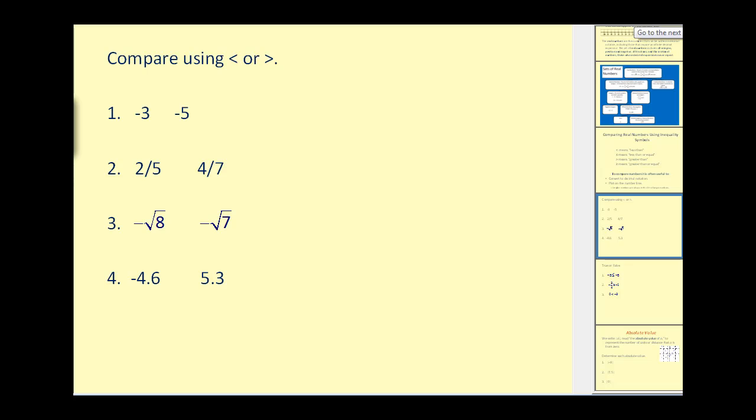So if we want to compare these two numbers, negative 3 and negative 5, and we can't tell just by looking which one is smaller or larger, we could just make a number line and we would see negative 3 occur somewhere in here and negative 5 here.